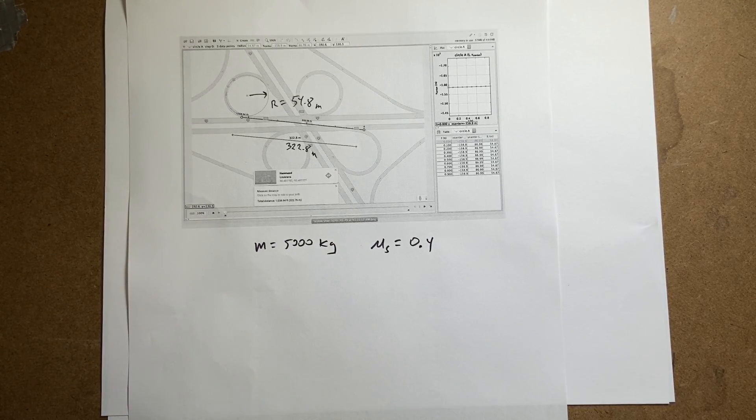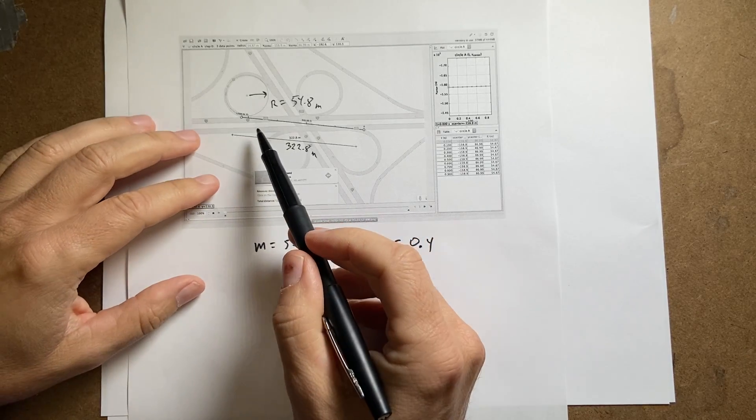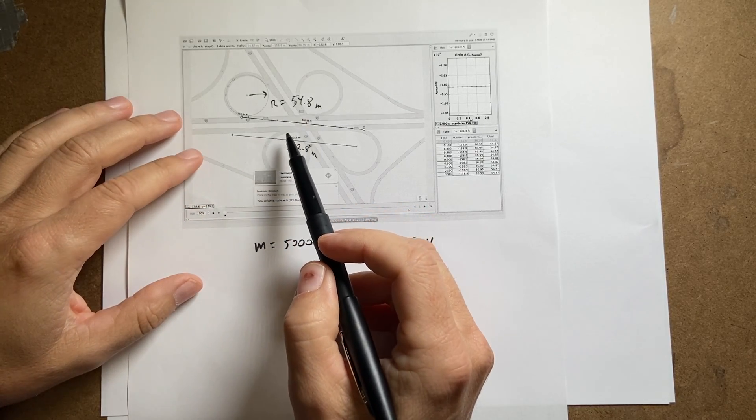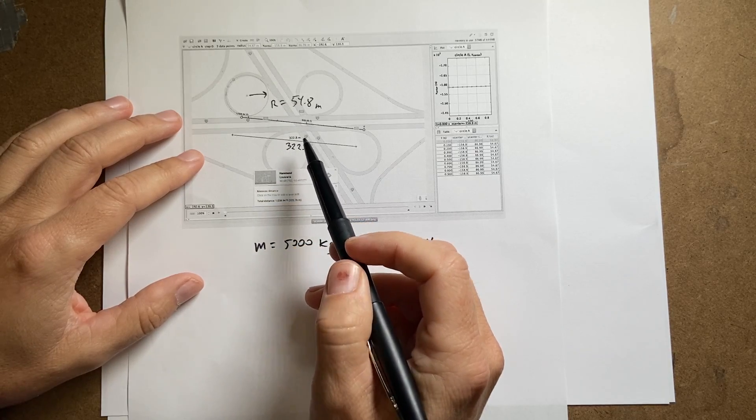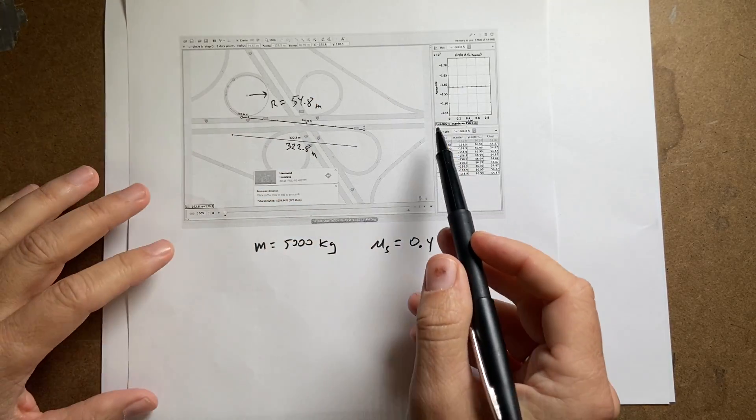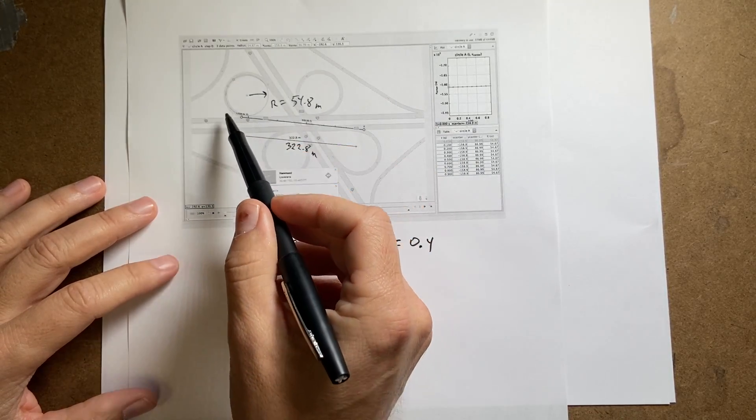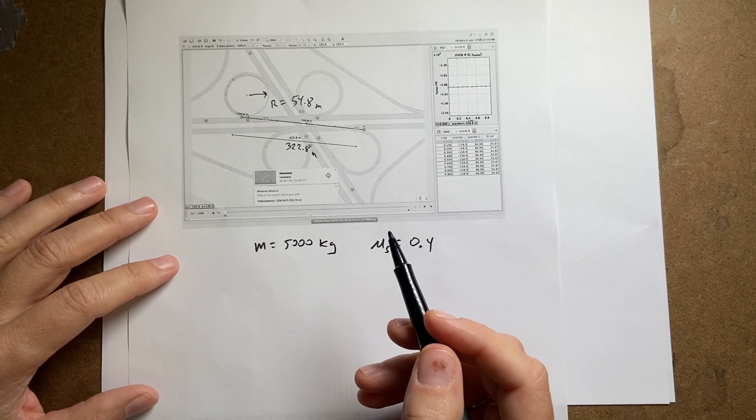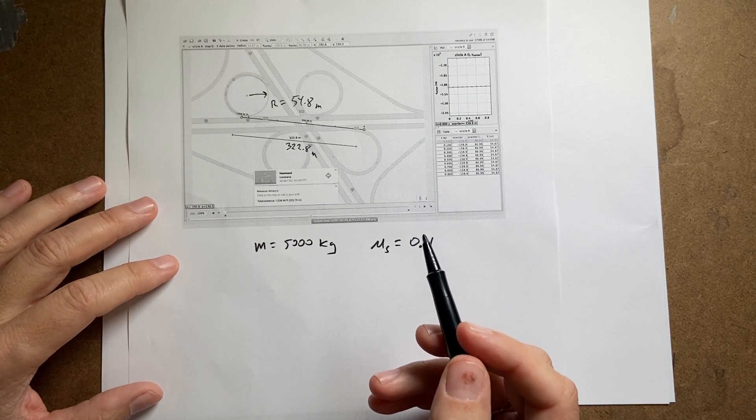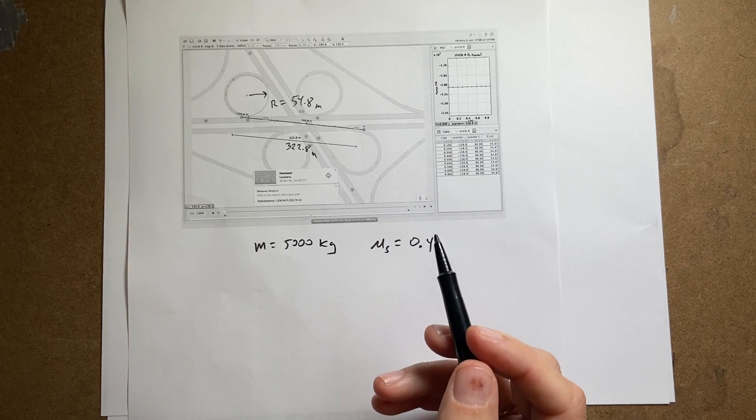Okay, I've made up a problem with some real-life connections for circular motion. So here is a map of the intersection between I-55 and I-12. And so it has these cloverleaf on-off ramps, which are kind of cool, but probably not the best design.